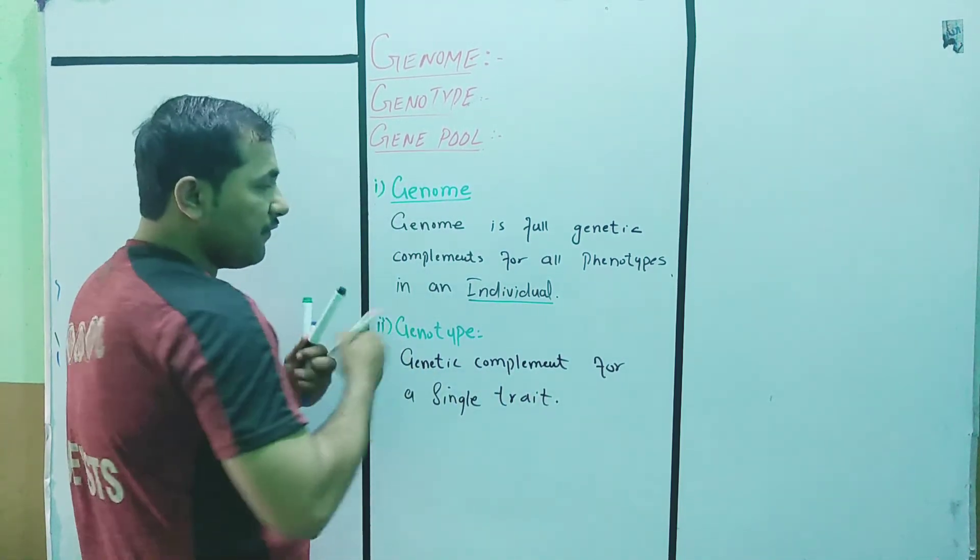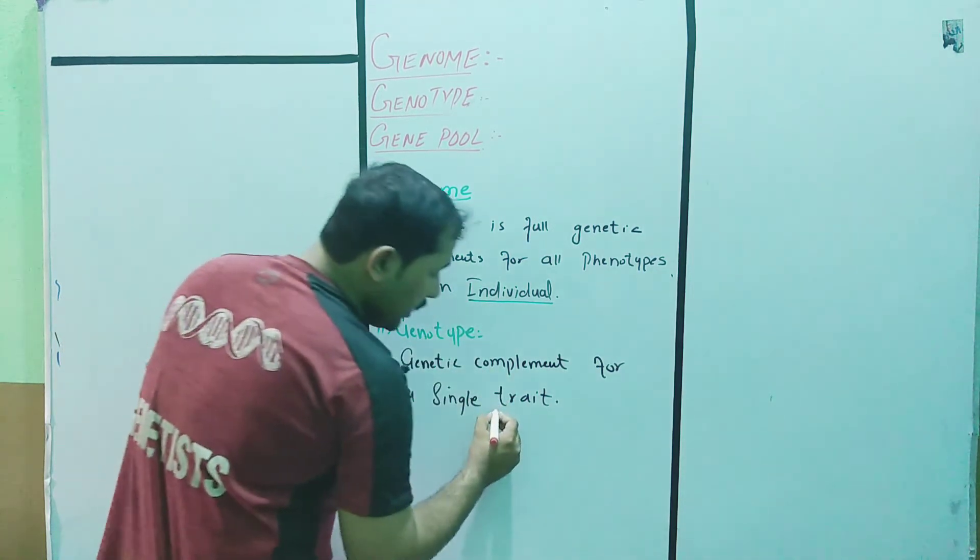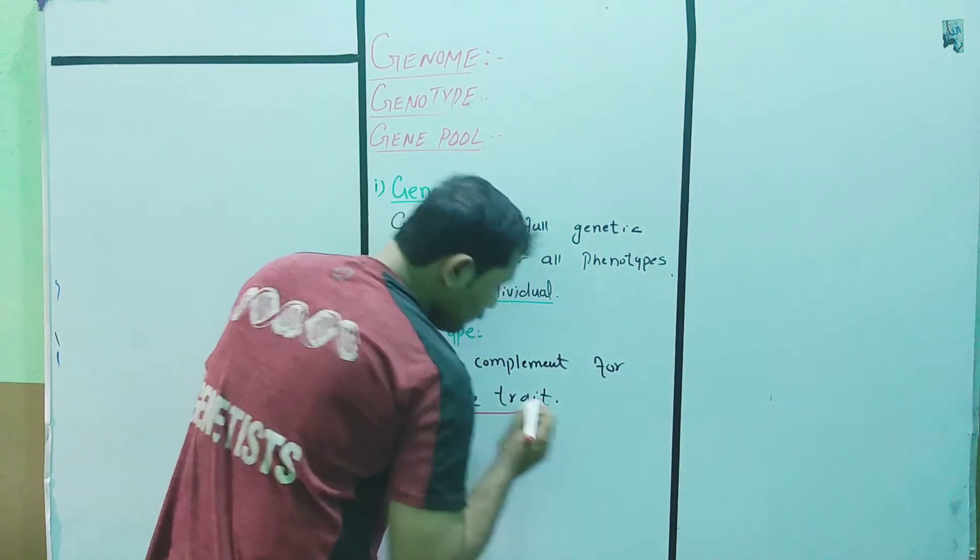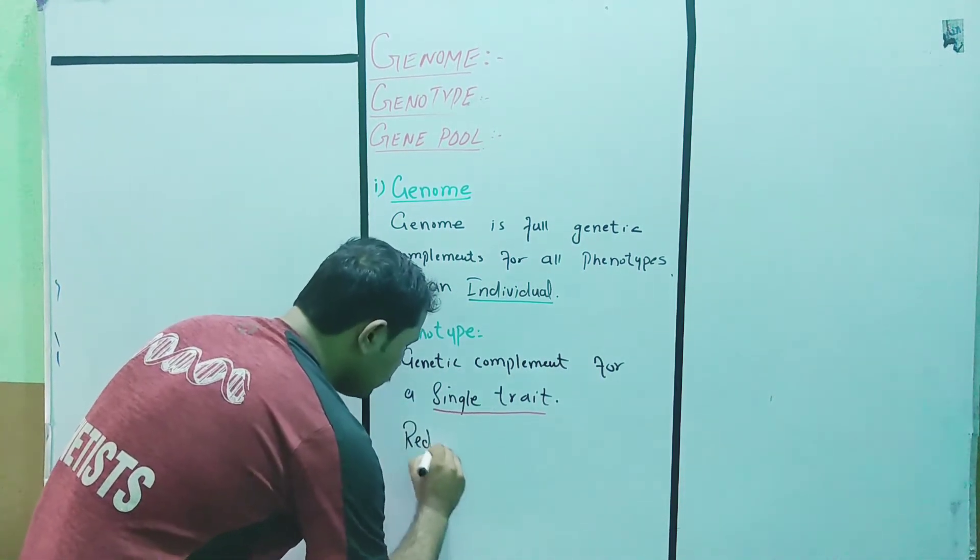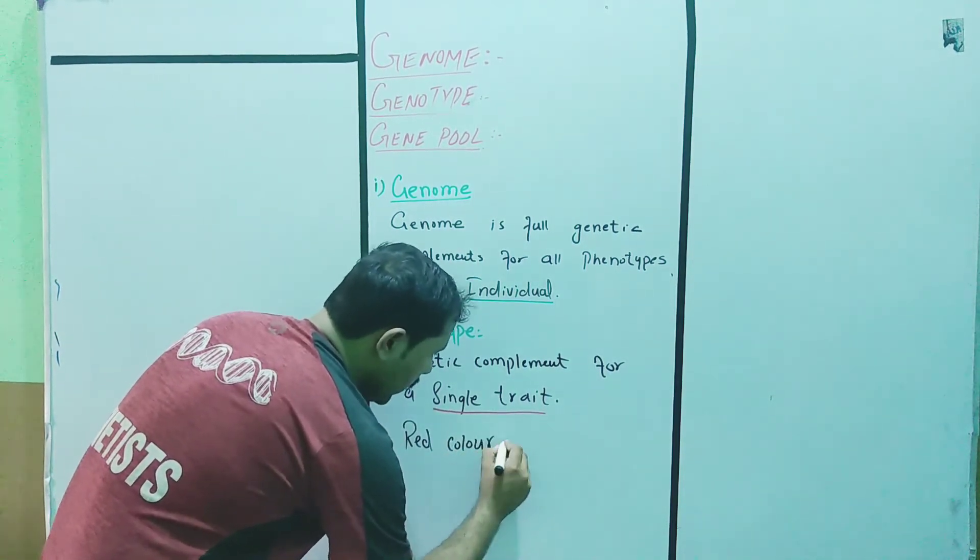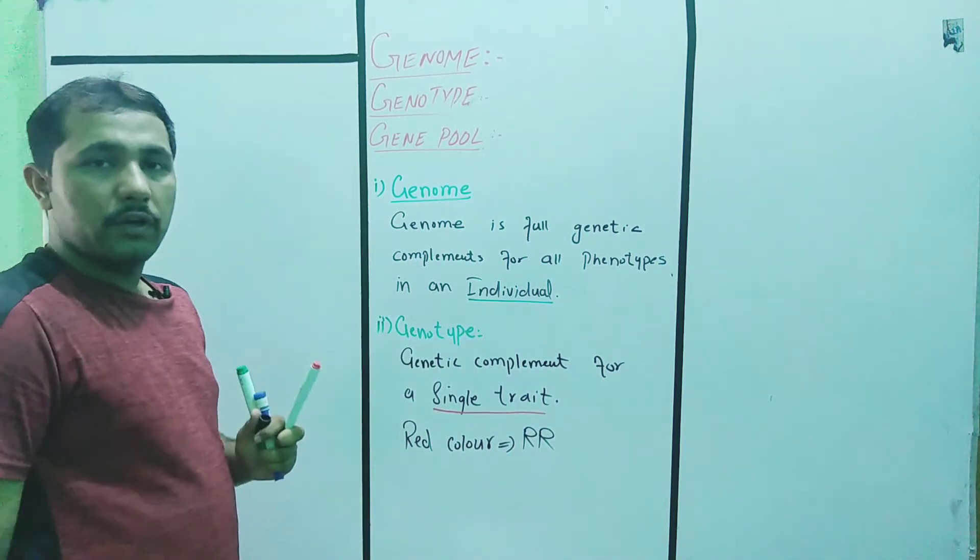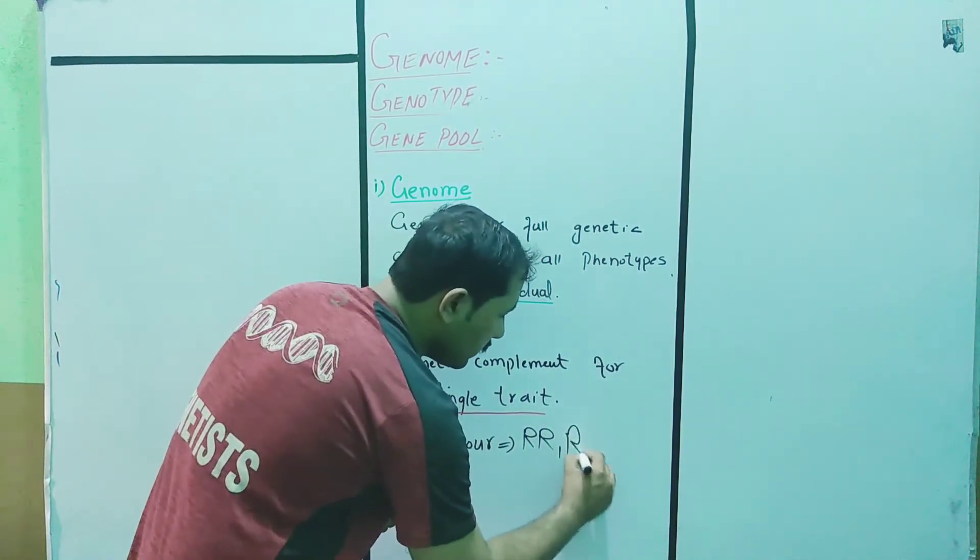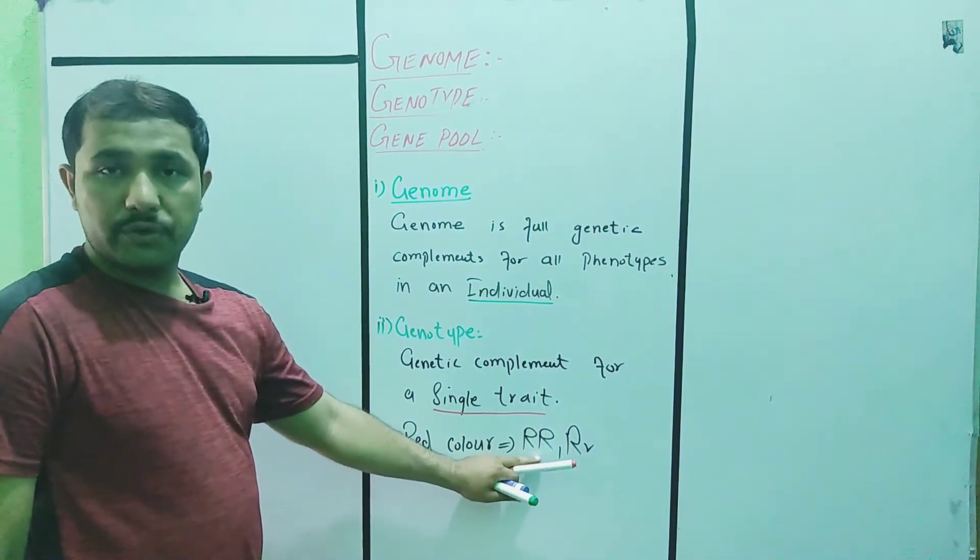Genome is for an individual, but genotype is for a single trait. Let's suppose red color of the flower is encoded by RR dominant, or Rr heterozygous condition. This is its genotype.